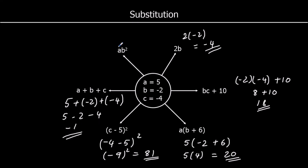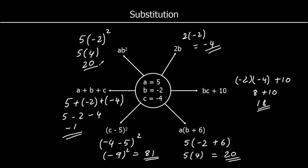And ab squared, meaning a times b squared. 5 times negative 2 squared. Negative 2 squared is positive 4. So it's 5 times 4, which is 20.